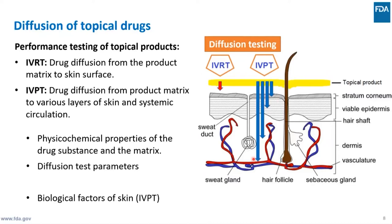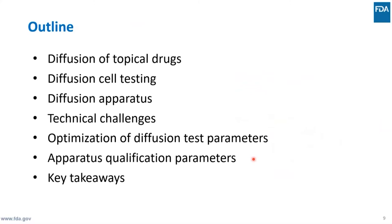Diffusion testing in general depends on many factors. Diffusion test parameters should be optimized in order to have meaningful results, which depends mainly on the physicochemical properties of the drug substance as well as the matrix used. For permeation testing, physiological and biological conditions of the skin are of prime importance. Today I will cover diffusion mechanisms, diffusion cells and apparatus, technical challenges, optimization of diffusion parameters, and apparatus qualification.